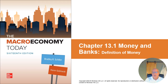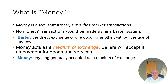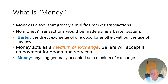Today we pick up with chapter 13 on money and banking, specifically subsection 13.1, where we're going to define what money is. Defining money turns out to be very important for understanding the underlying principle of what money is — not just what we accept as money in our particular society. Money is a tool that greatly simplifies market transactions because it avoids barter. Exchange existed long before money was invented, and barter is the direct exchange of one good for another without the use of money. By acting as a medium of exchange, money eliminates the need for both parties to have a good that the other party wants.